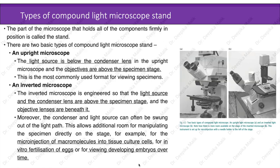There are two basic types of compound light microscope stands. In an upright microscope, the light source and condenser lens are below the stage and the objective lenses are above the specimen stage — the most commonly used format. In an inverted microscope, the light source and condenser lens are above the specimen stage and the objective lenses are beneath it. The condenser and light source can often be swung out of the light path, allowing room for manipulating the specimen directly on the stage — for example, for micro-injection of macromolecules into tissue culture cells, in vitro fertilization of eggs, or viewing developing embryos over time.